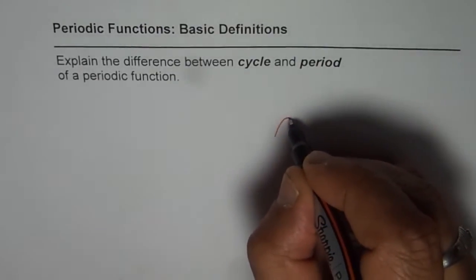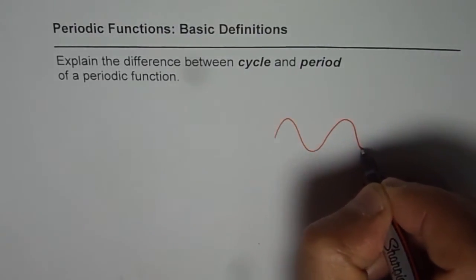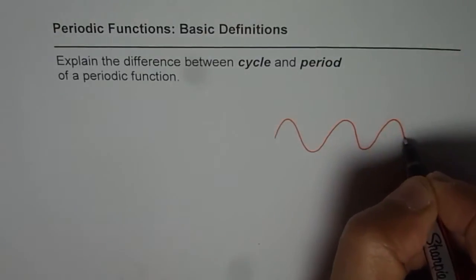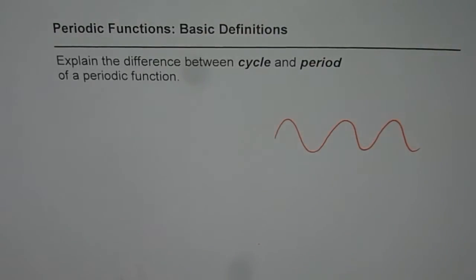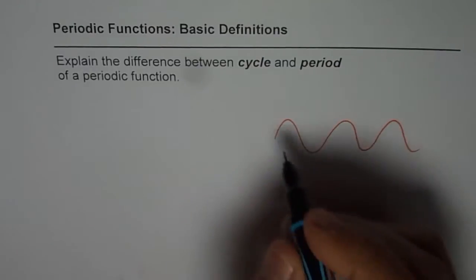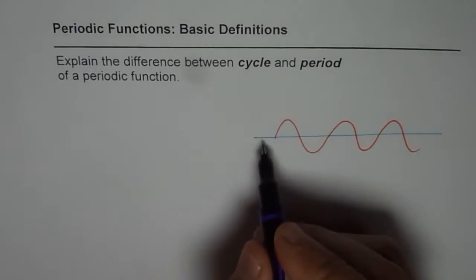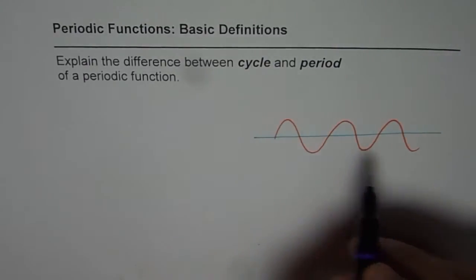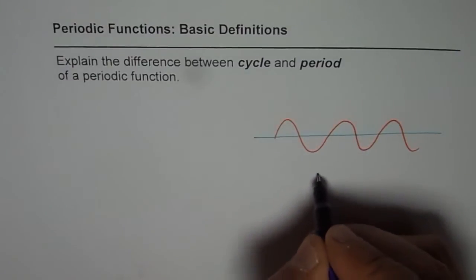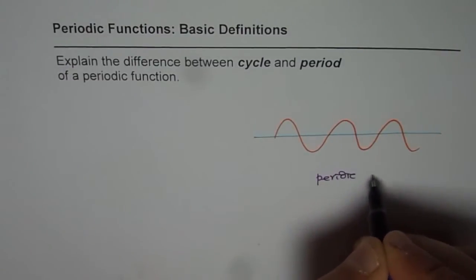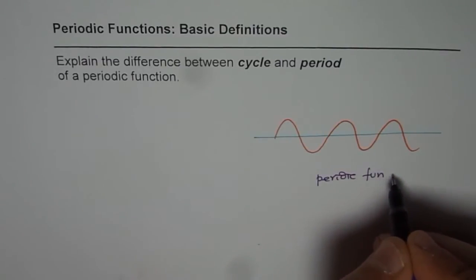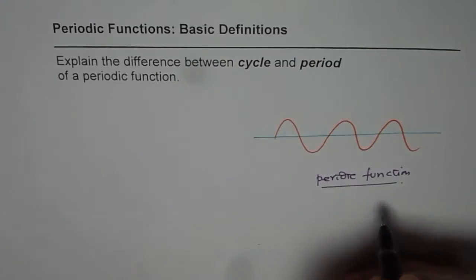Let me sketch one periodic function. Let us say this is a sine wave. And let us assume that it is being repeated and it is periodic. Let us assume it is periodic that is to be on the safe side. So let us say this is periodic. Now with the help of this periodic function, so we already have a periodic function, can you tell me what is the cycle and what is the period in this particular function? Are they same things or different things? That is what we are going to explore and understand in this video.